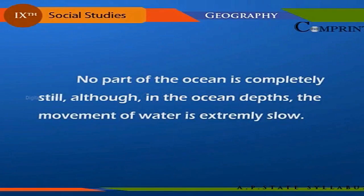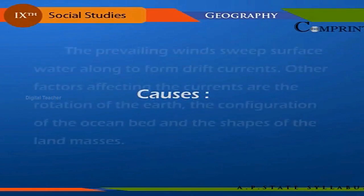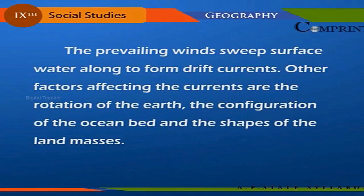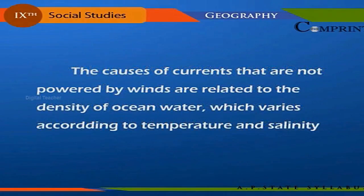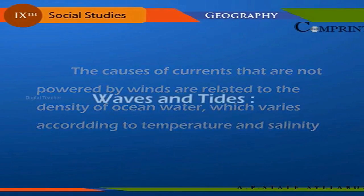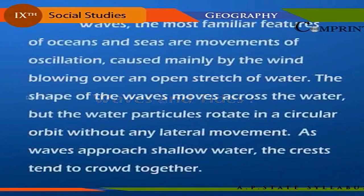No part of the ocean is completely still, although in the ocean depths the movement of water is extremely slow. The prevailing winds sweep surface water along to form drift currents. Other factors affecting currents are the rotation of the Earth, the configuration of the ocean bed, and the shape of the land masses. Currents not powered by winds are related to the density of ocean water, which varies according to temperature and salinity.